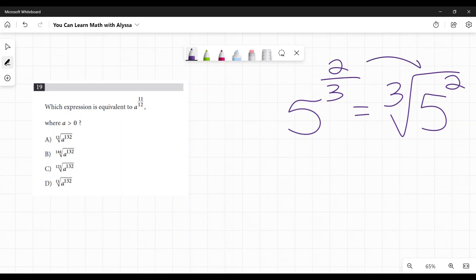That pattern, this is how you can switch back and forth. It doesn't matter what numbers they are. It could be 10 to the power of 15 over 72. That would be the 72nd root of 10 to the power of 15. That's what they're wanting you to know. That's the starting point. So let's look at this.